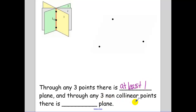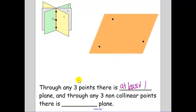Now, through any three non-collinear points — say any three random points over here — how many planes go through those? There is only one plane. So basically, three non-collinear points make up a plane. Any three non-collinear points are going to define a plane.